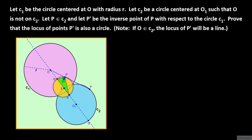To show that triangle Q prime P prime S prime is a right triangle, we will examine two pairs of triangles. We will show that each pair is made up of similar triangles. The first pair is triangle OPQ and triangle OQ prime P prime. The second pair is triangle OPS and triangle OS prime P prime. To get started, we show that triangle OPQ is similar to triangle OQ prime P prime.